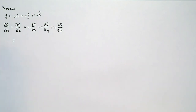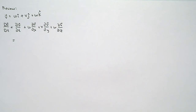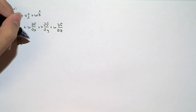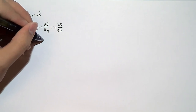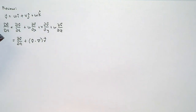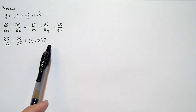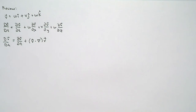We introduced the del operator last week, and we saw that there are different ways to use this del operator. One such way was we could use it to map a vector-valued function and essentially turn it into an operator. With that definition, we could write the material derivative in a simpler form. These are the two different ways of writing down the material derivative. When you're solving equations, you're going to want to expand it, but when manipulating the expression, you may want to use the simpler form.